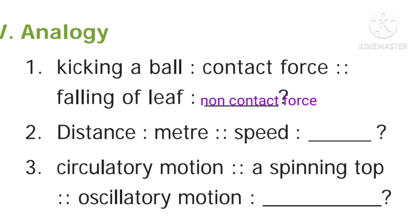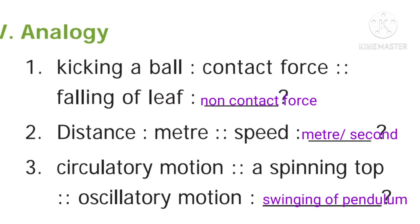Second analogy: distance — meter; speed — dash. Answer: meter per second. Third analogy: circulatory motion — a spinning top; oscillatory motion — dash. Answer: swinging of a pendulum.